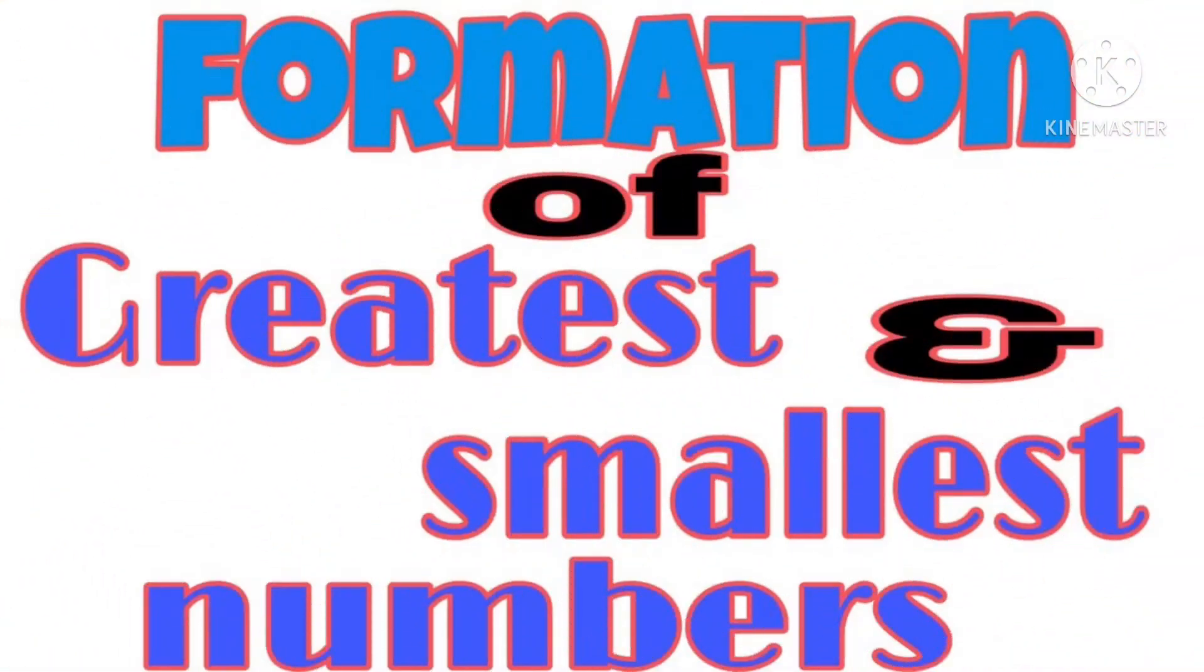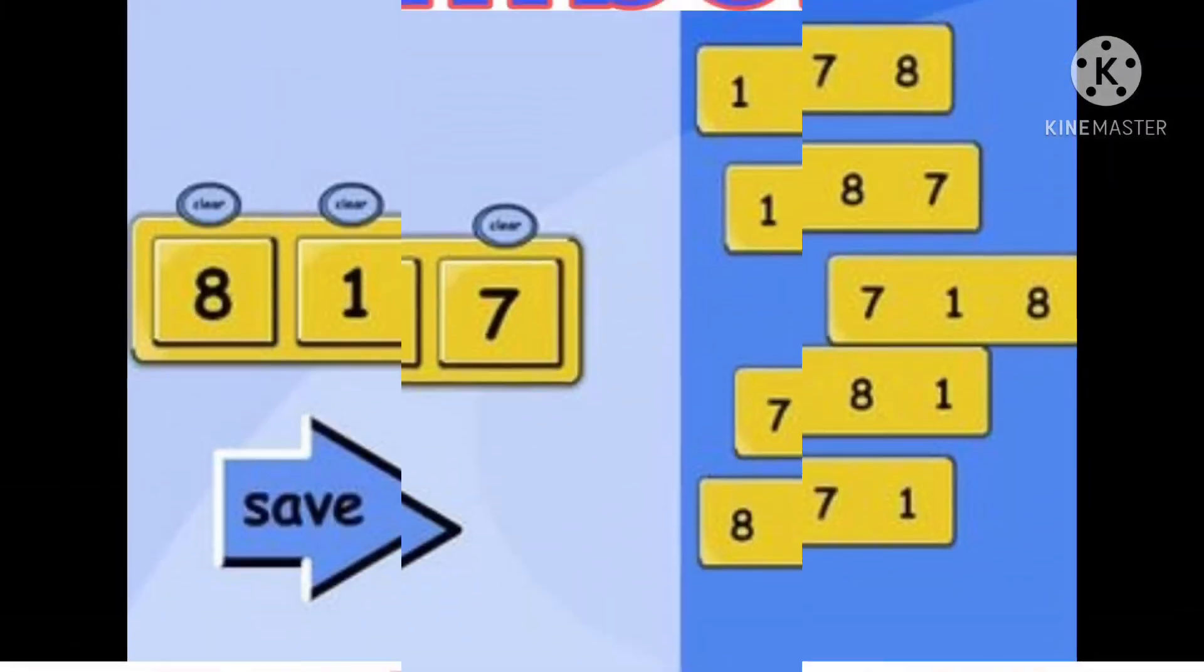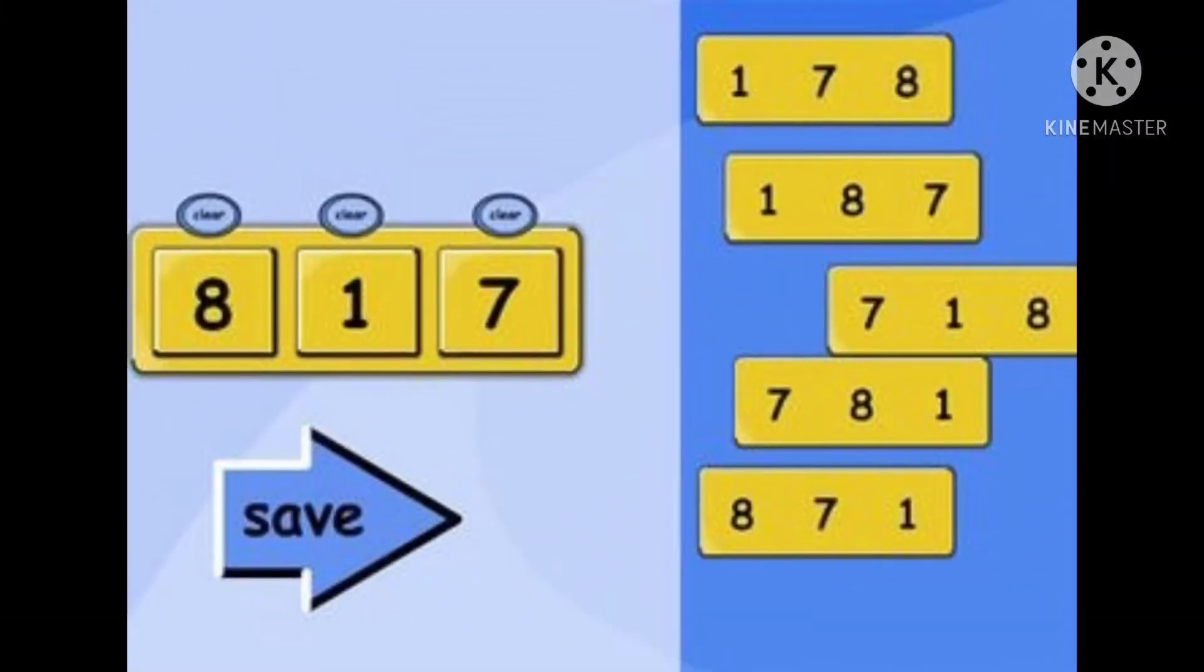Welcome back dear students. In this module of knowing our numbers, we will discuss formation of greatest number and smallest number using different digits. As we can see that using digits like 1 and 7, so many numbers we can make like 178, 187, 718, etc.